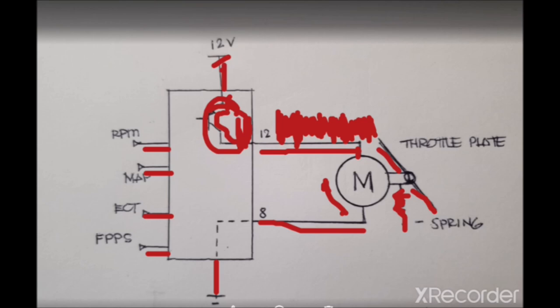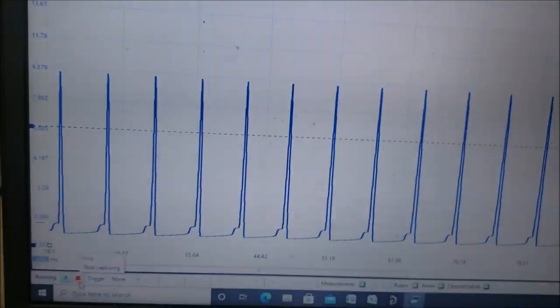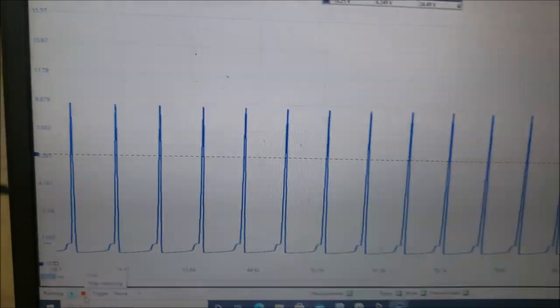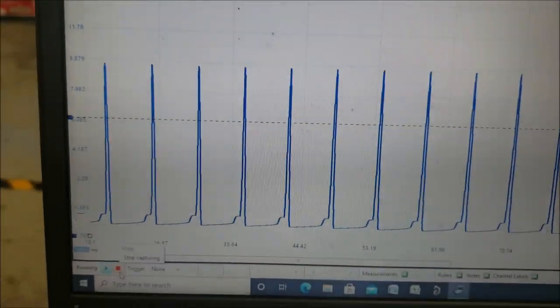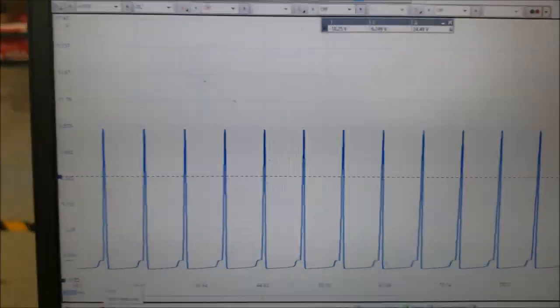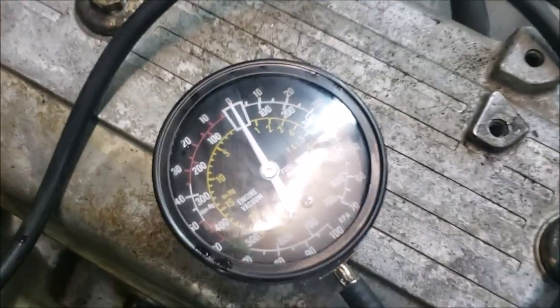All right, so I swapped out the box, still have the same connections, and already I can see a big difference. I don't have that intermittent pulsing. Let's try to crank this. I'm going to show you the vacuum gauge, cranking now.